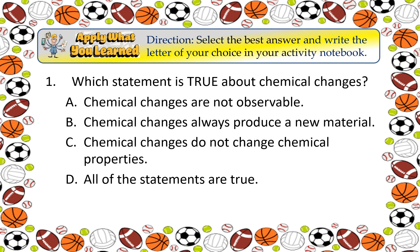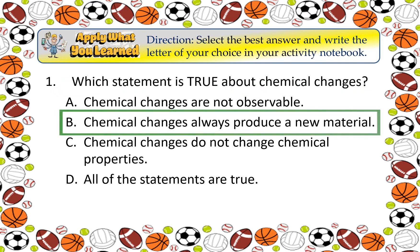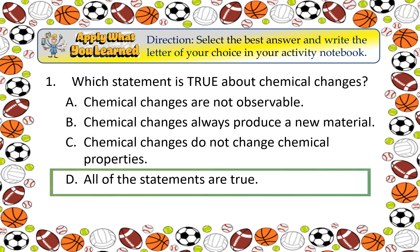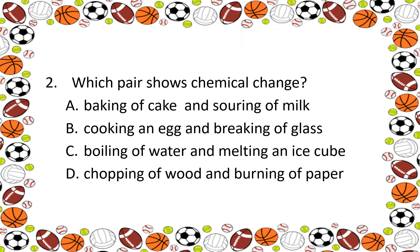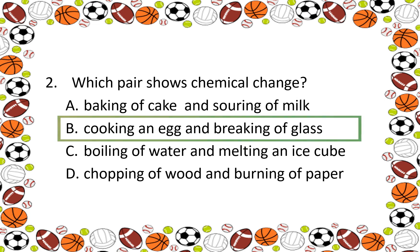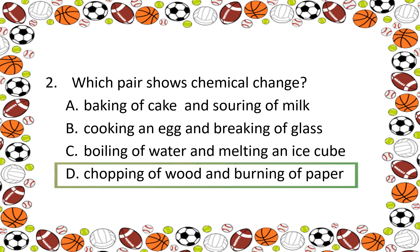Directions: Select the best answer and write the letter of your choice in your activity notebook. Number 1: Which statement is true about chemical changes? A. Chemical changes are not observable. B. Chemical changes always produce a new material. C. Chemical changes do not change chemical properties. D. All of the statements are correct. Number 2: Which pair shows chemical change? A. Baking of cake and souring of milk. B. Cooking an egg and breaking of glass. C. Boiling of water and melting an ice cube. D. Chopping of wood and burning of paper.